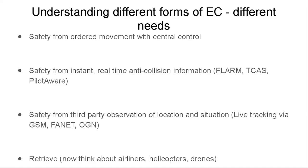Think about airliners, helicopters, and drones. What would a drone want from electronic conspicuity? You might want to know the last position of your drone before it disappeared from sight, but more importantly as a drone pilot you might want EC to flag your presence to GA and commercial air transport so you can fly in airspace you're currently banned from. So you can see all these conflicting needs — I want to be retrieved, I want to fly straight from airport to airport without circling, I want to see other gliders and not crash at cloud base. These needs are never going to be met by one system.